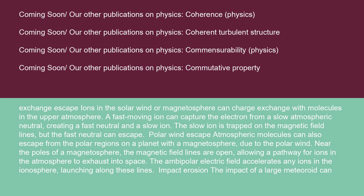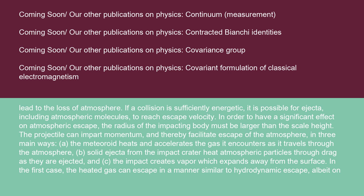Impact erosion: the impact of a large meteoroid can lead to the loss of atmosphere. If a collision is sufficiently energetic, it is possible for ejecta, including atmospheric molecules, to reach escape velocity. In order to have a significant effect on atmospheric escape, the radius of the impacting body must be larger than the scale height. The projectile can impart momentum and thereby facilitate escape of the atmosphere in three main ways. The meteoroid heats and accelerates the gas it encounters as it travels through the atmosphere.